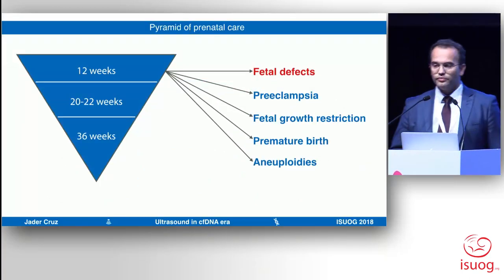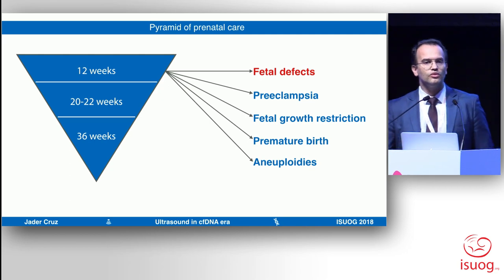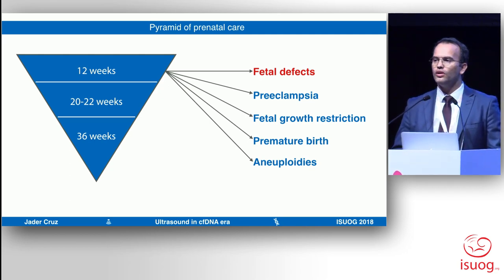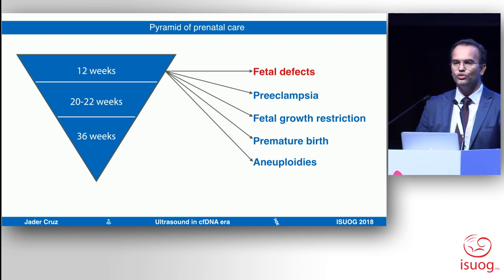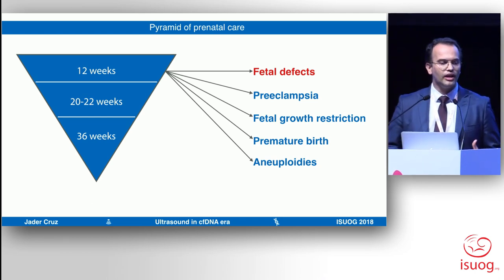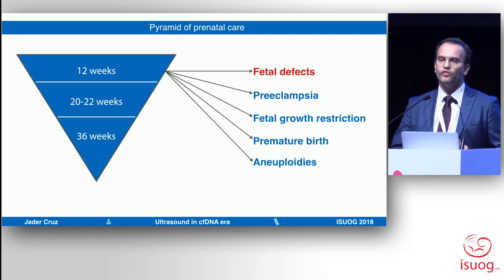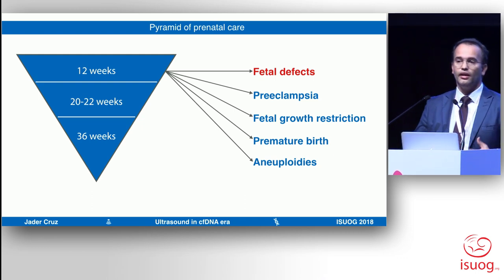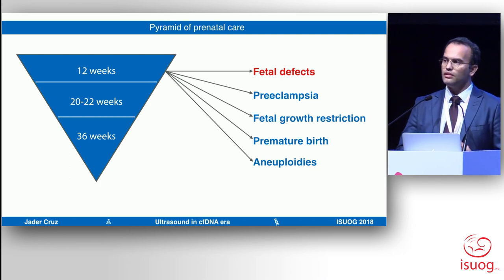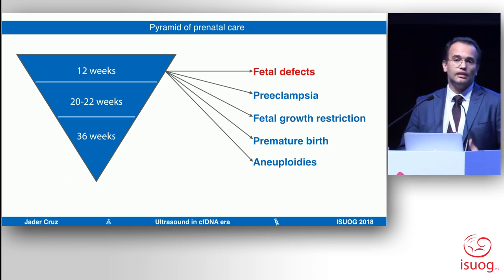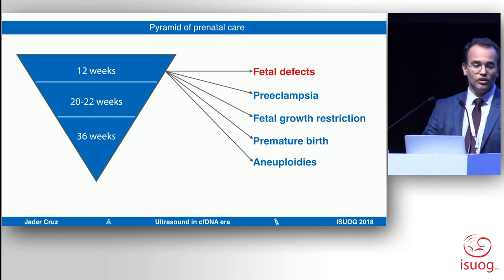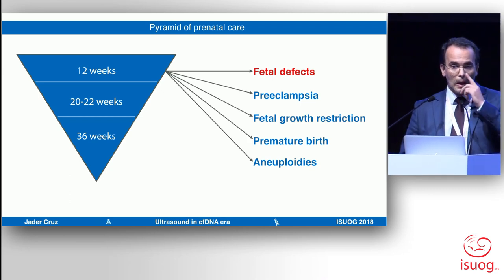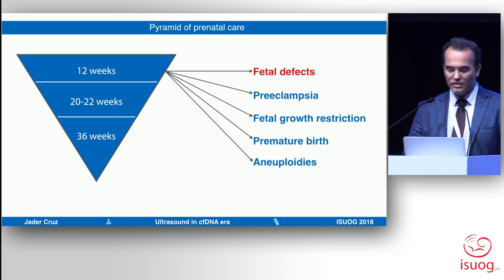Even though we are living in an era where you have cell-free DNA for fantastic screening for trisomy 21, 18, and 13, we learned from the principle of the inversion of the pyramid of care from Professor Kypros Nicolaides that the first trimester ultrasound is much more than just looking at nuchal translucency, nasal bone, tricuspid regurgitation, and ductus venosus. Now we amplify this ultrasound scan — you can actually look for fetal defects, screen for preeclampsia, fetal growth restriction, premature birth. And still, in a small but certain proportion of patients undergoing cell-free DNA, they don't have any result.